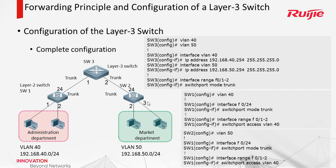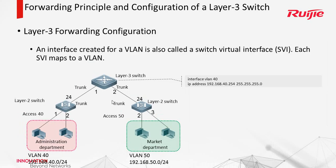For the layer 2 switch, just configure the VLAN and change the mode — here access, here trunk. In the layer 3 switch, we can create the interface VLAN. In fact, it has a name called Switch Virtual Interface, or SVI. Each SVI maps to a VLAN.